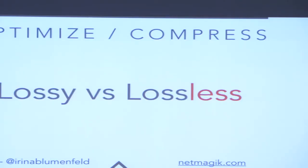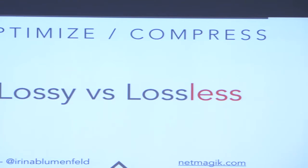After you scale the physical size of the image, you need to compress and optimize it. There are two types of compression: lossy and lossless. Compression removes image metadata such as image dimensions, when it was created, and image resolution — all those details take up space and you don't need to send them to the web. Lossless, as the name implies, compresses without removing pixels — it's good if you have a photography website and need to preserve finer details. Otherwise, I recommend using lossy because it gives you the most file size savings.